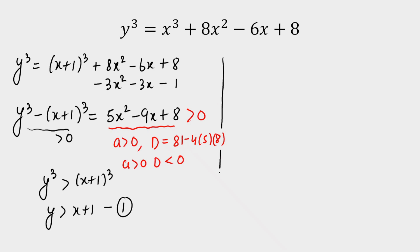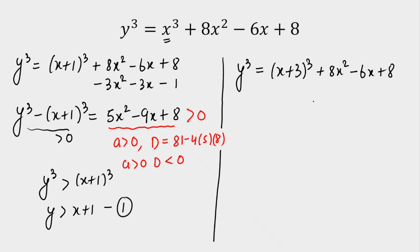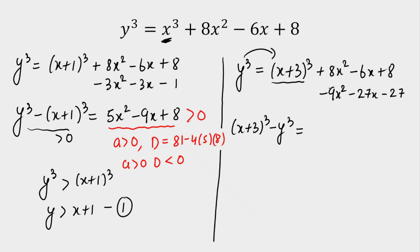For the second inequality, I will again make a perfect cube. This time I write y³ = (x+3)³ plus the remaining part 8x² - 6x + 8 as it is. After opening (x+3)³, x³ cancels and I subtract the remaining: minus 9x² - 27x - 27. Taking y³ to the other side, we get: (x+3)³ - y³ = x² + 33x + 19.